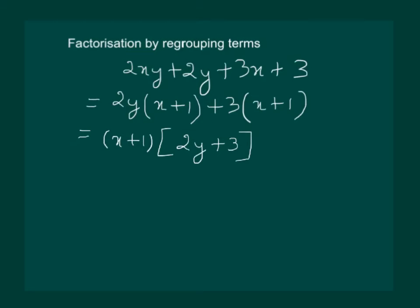This can also be written as x plus 1 into 2y plus 3, and now we will say that x plus 1 and 2y plus 3 are the factors of 2xy plus 2y plus 3x plus 3.